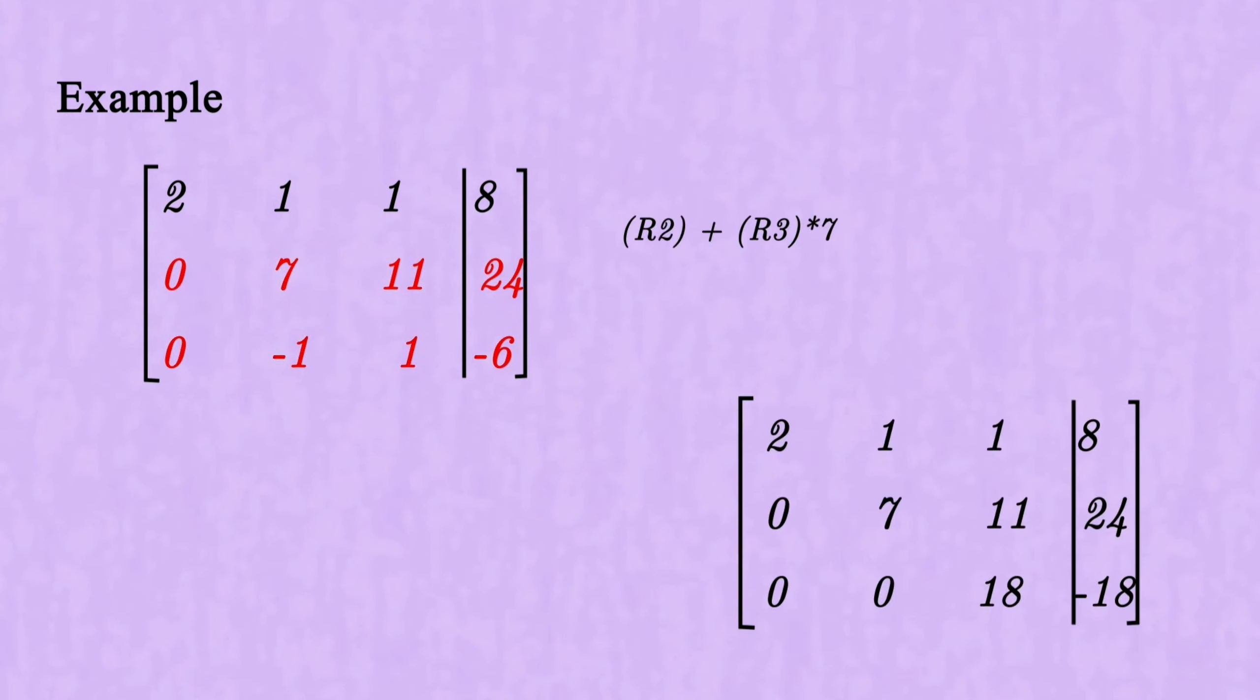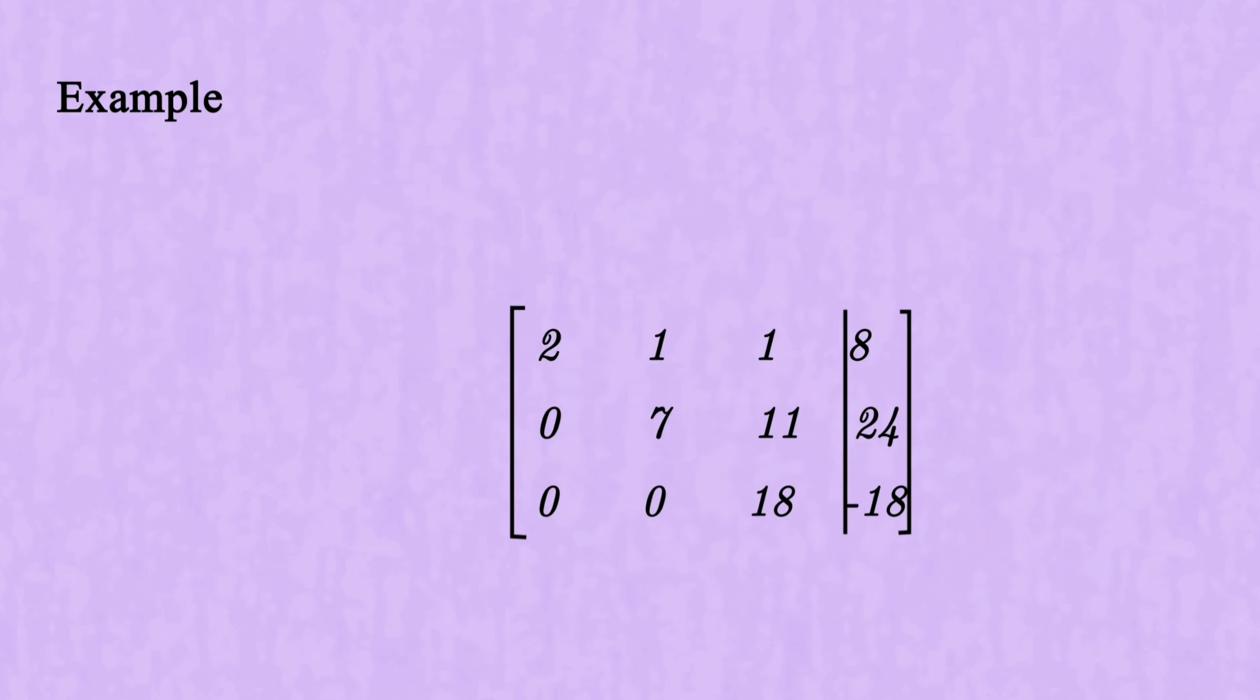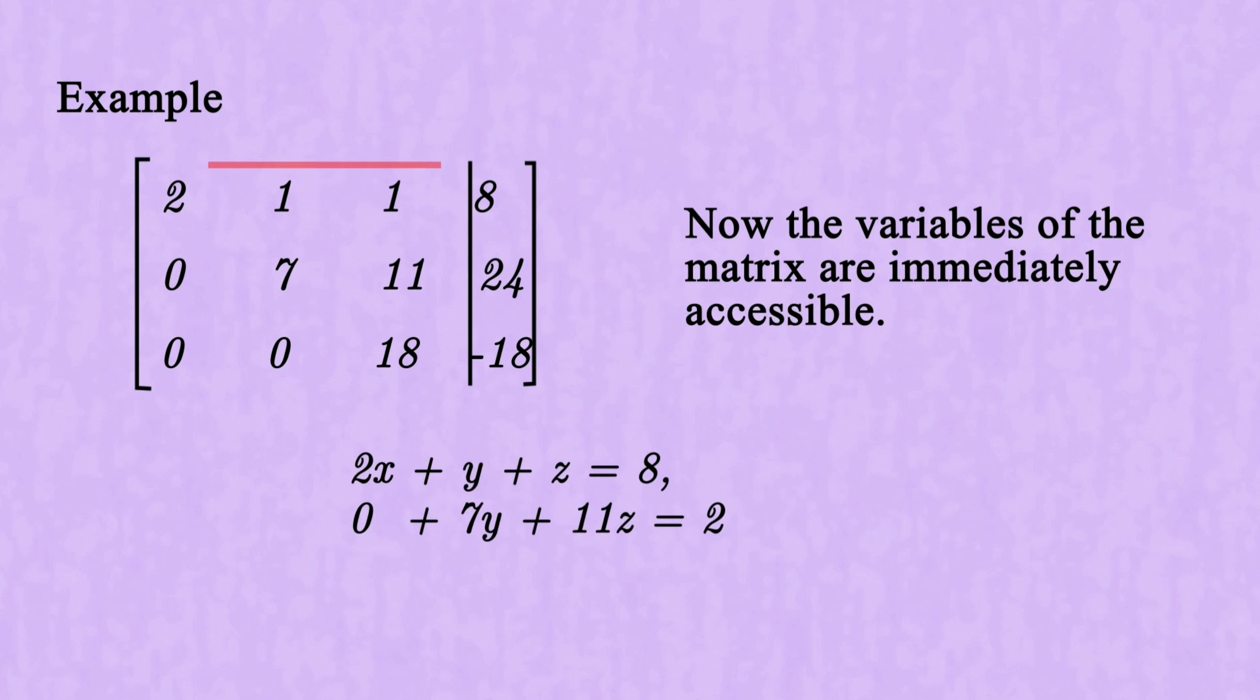Row 2 plus row 3 multiplied by 7 applied to row 3. Now the variables of the matrix are immediately accessible.